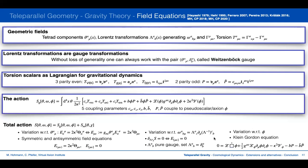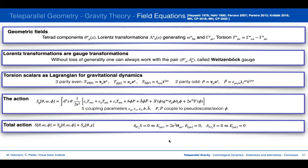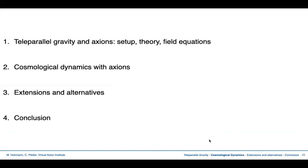Last but not least, variation with respect to the axion field gives a Klein-Gordon-like equation which determines the dynamics of the axion field. This concludes the summary of how teleparallel gravity works and how it enables coupling axions to general relativity. Some literature can be found in the references and in our paper.